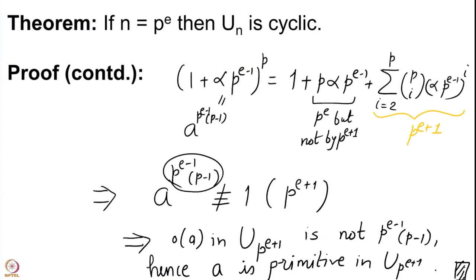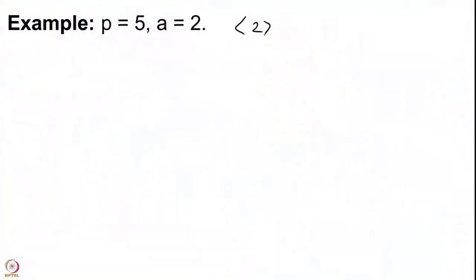This proves that when p is an odd prime, the group of units modulo p^e is a cyclic group. The only remaining case now is where n is 2 times p^e. But before that, let us look at the example where p=5 and a=2. We know that 2 is not just a generator for U(5) but it is also a generator for U(25). Now we have to verify that the order of 2 modulo 125 is the correct number.